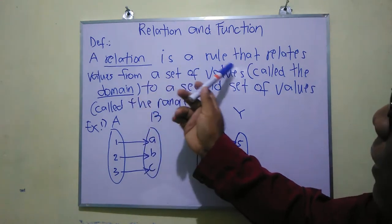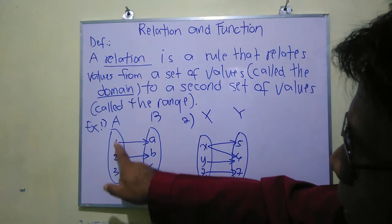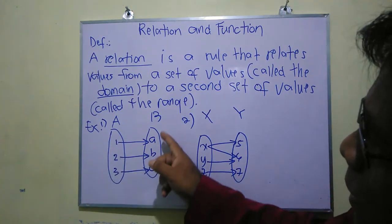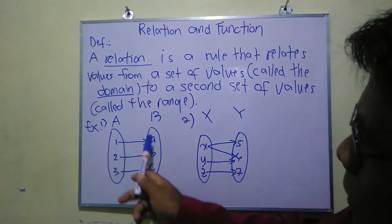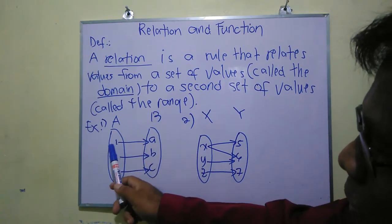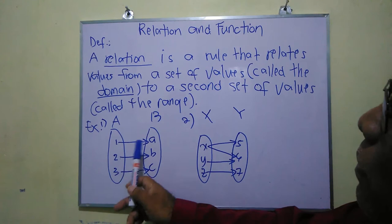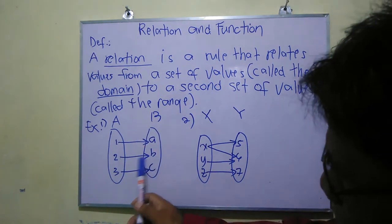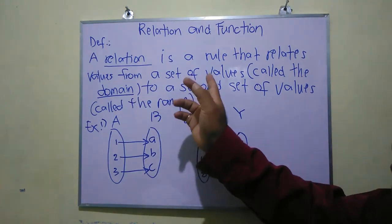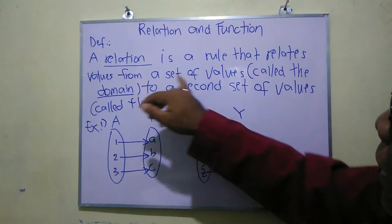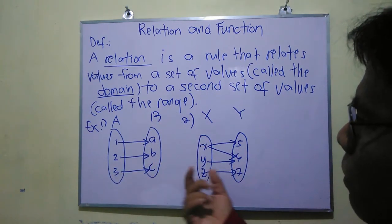According to the rule, values relate from one set to another. This is set A, and these values are called the domain. This is set B, and these values are called the range. The first element of set A corresponds to an element in set B. For example, element 1 corresponds to 'a' in set B, element 2 corresponds to 'b', and 3 corresponds to 'c'. This is an example of a relation, because each element in the domain corresponds to a value in the range.